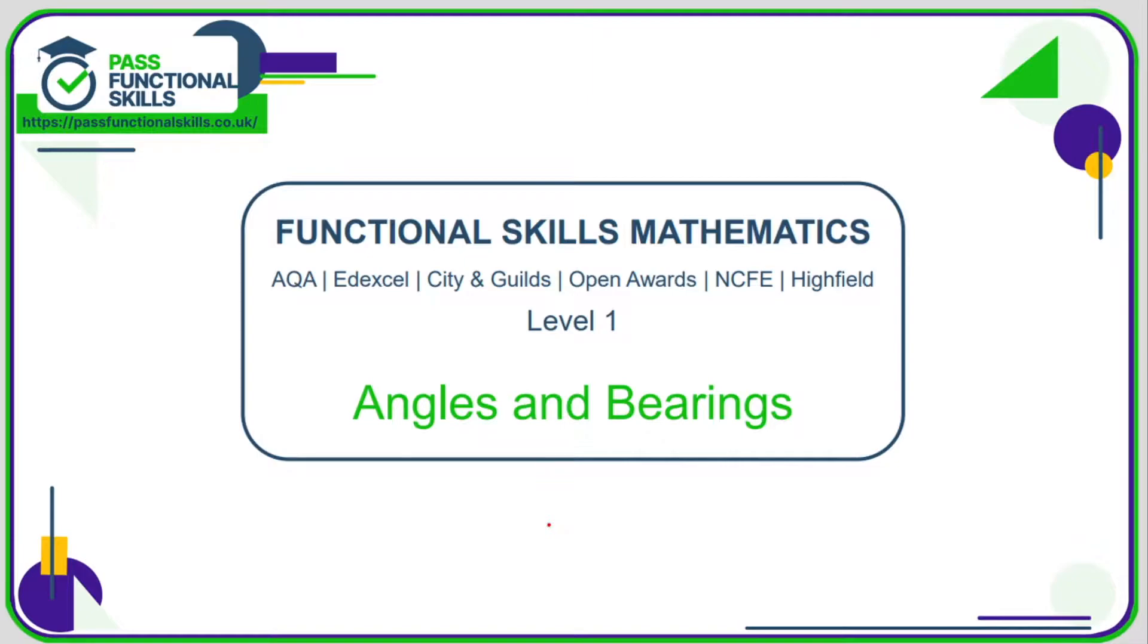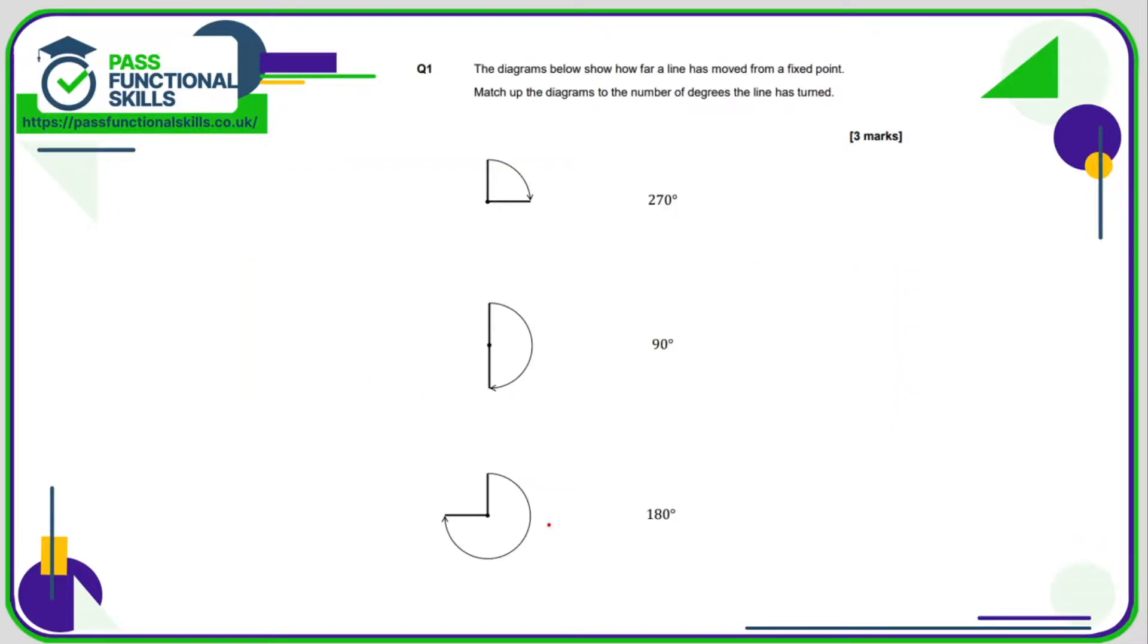Let's take a look at the angles and bearings questions. The diagrams below show how far a line has moved from a fixed point. Match up the diagrams to the number of degrees the line has turned. This one here is a quarter turn, so that is a 90 degree angle. This is 180 degrees and this is three quarters of the way around, which is 270 degrees.